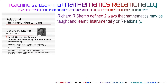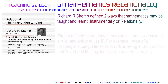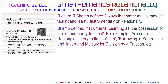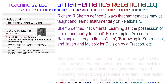Richard Skemp defined two ways that mathematics may be taught and learnt: instrumentally or relationally. Skemp defined instrumental learning as the possession of a rule and ability to use it. For example, area of a rectangle is length times width, borrowing in subtraction, and invert and multiply for division by a fraction.